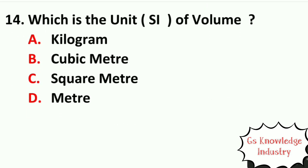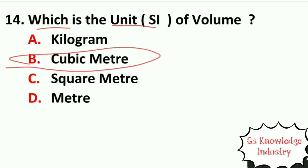Question fourteen: which is the unit of volume? Option A, kilogram. Option B, cubic meter. Option C, square meter. Option D, meter. The right answer is Option B — cubic meter is the unit of volume.